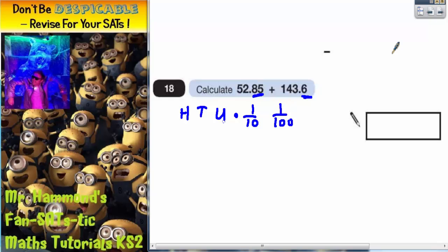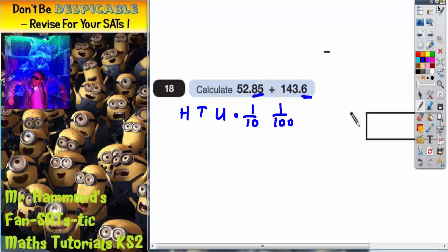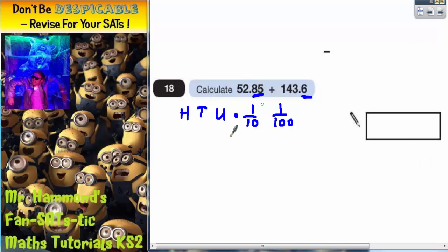Now we've got the column headings established, we can start filling the numbers in. So we've got 52.85. So 52 is five tens and two units, and then we've got the 0.85. And 143.6 is 100, four tens, three units, and then we'll just put the 0.6 in. So as you can see, really crucial that we get that lined up. The decimal points must be lined up here.